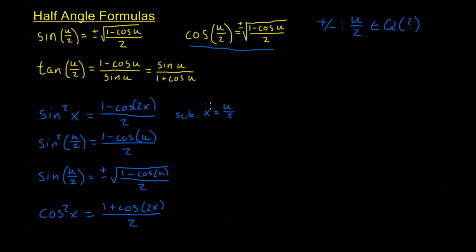Notice tangent doesn't have a plus or minus sign. If you remember, we did a previous problem where we actually already proved that these two expressions — 1 minus cosine u over sine u and sine u over 1 plus cosine u — are equal to each other. I'm only going to show one of these, and you can on your own make sure you can prove that these two sides actually equal each other for any value of u.